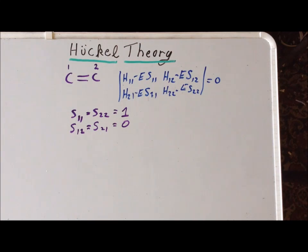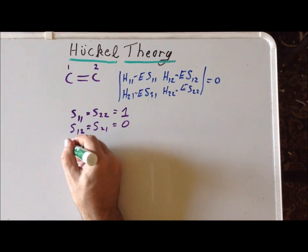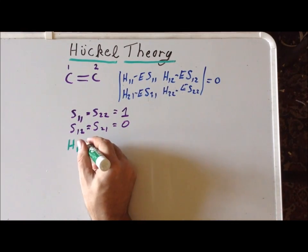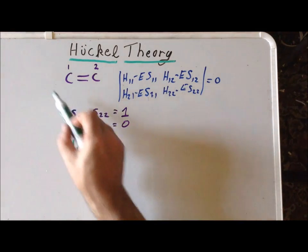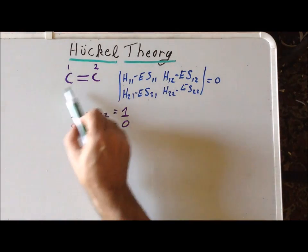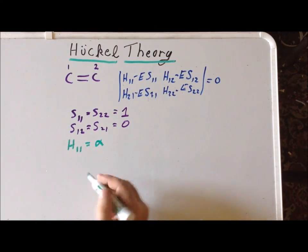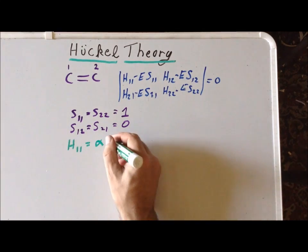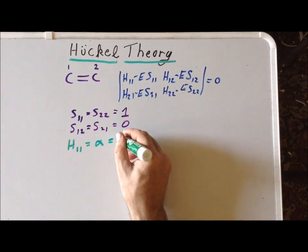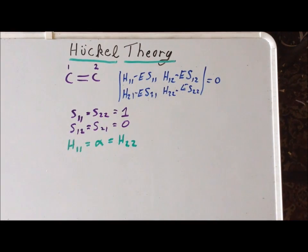Next, we set the integral H₁₁. This is the Coulomb integral for the energy of an electron on atom number 1, and we call this alpha. That's the energy of a pi electron on a carbon atom.